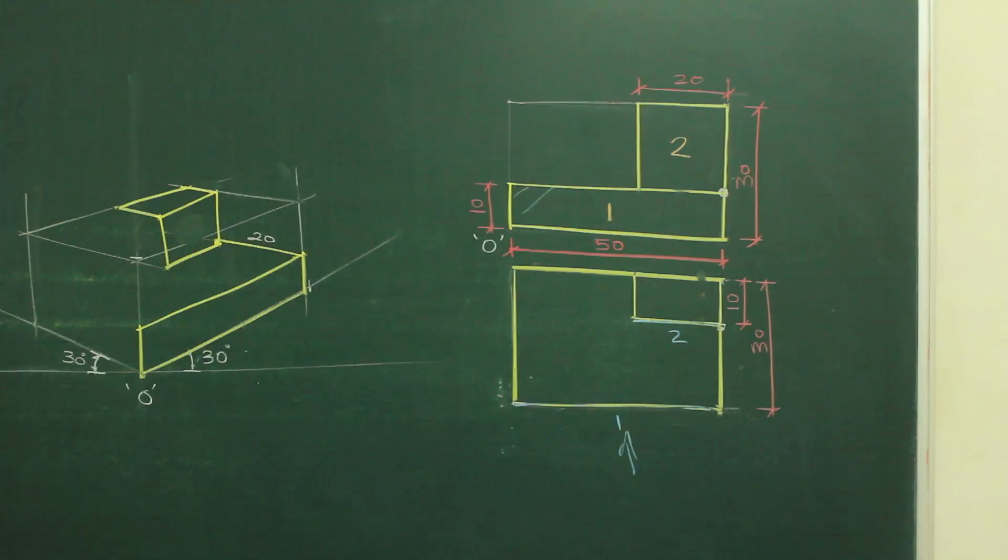Same way, in isometric, whatever is there in the front, the same thing is behind. So this part is behind, you have to go behind by 10. You also go behind by 10 and draw this line.